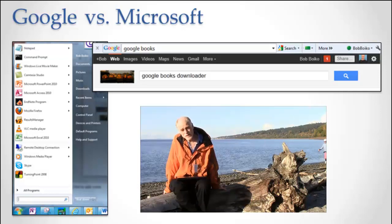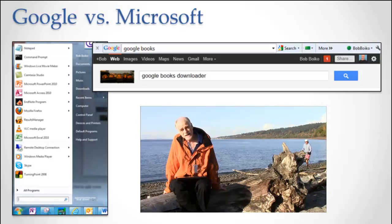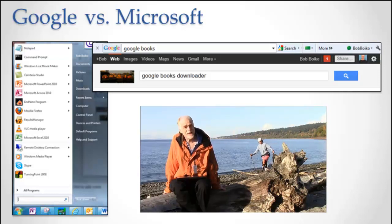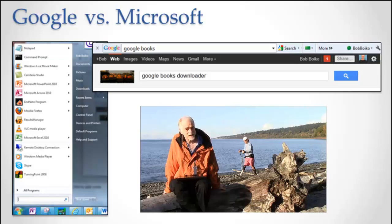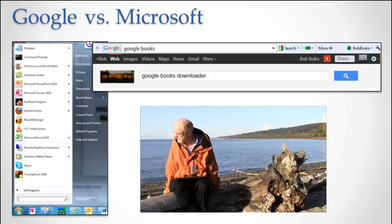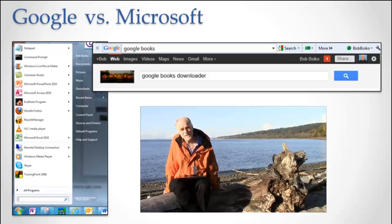Two different user interfaces for frankly the same thing — I've got lots of applications that I could run. One's running off of Google in the cloud. That's Google's big thing: they're running in the cloud, meaning they're not on your desktop. Why aren't they on your desktop? Because Microsoft's on your desktop.